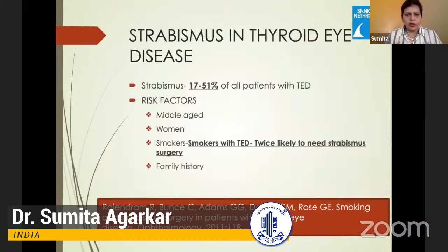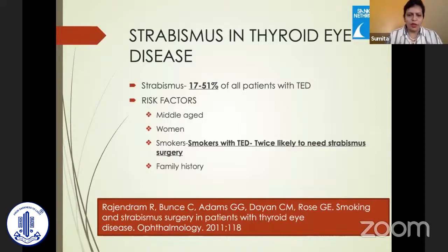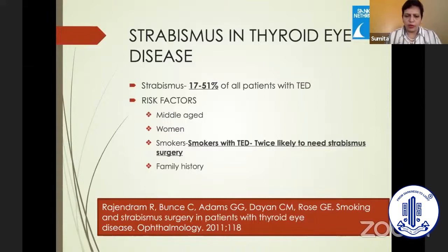It affects — different studies report different numbers — but anywhere from 17 to 51% of patients with thyroid eye disease are likely to have strabismus. We seem to see less strabismus in thyroid patients from India compared to what is reported in the Western literature. Risk factors include middle-aged women, and smoking — smoking is a very important risk factor. A study by Rajindran et al. reported that smokers with thyroid eye disease are twice as likely to need strabismus surgery.